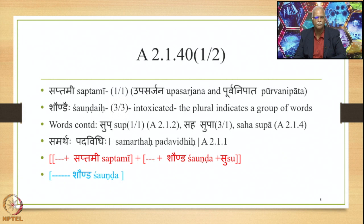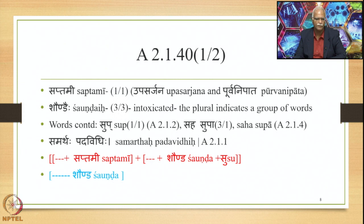Thus the word ending in Saptami occupies the initial position of the compound. The word Shaunda is stated in the Tritiya Vibhakti; Shaunda means intoxicated, and the plural indicates a group of words. The words continued are Dharasupp, Sahasuppa, and Samarthapadavidhihi. The overall structure has a Pratipadika followed by Saptami Vibhakti as the Purva Pada, followed by another Pratipadika from the set Shaunda etc. followed by Su, yielding the Pratipadika of the Purva Pada and Shaunda etc. as the Uttara Pada.